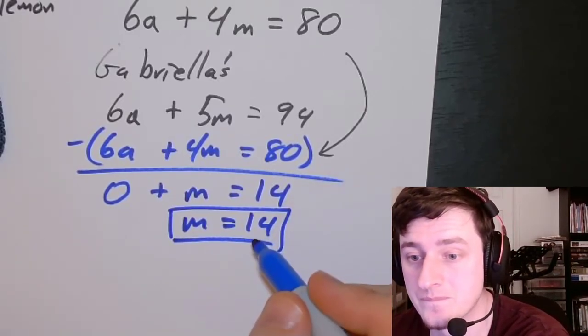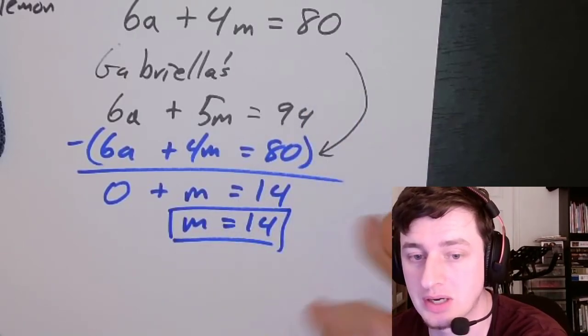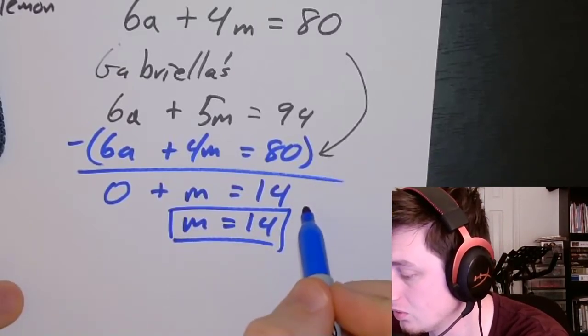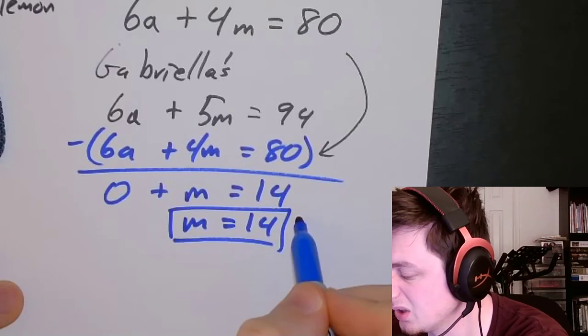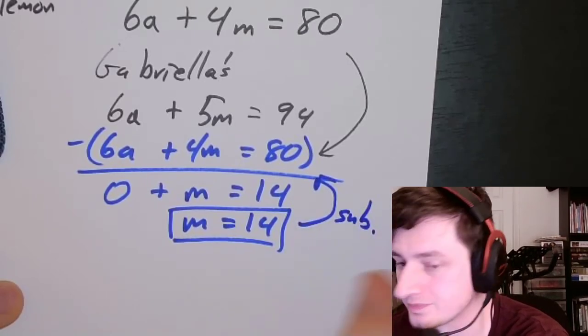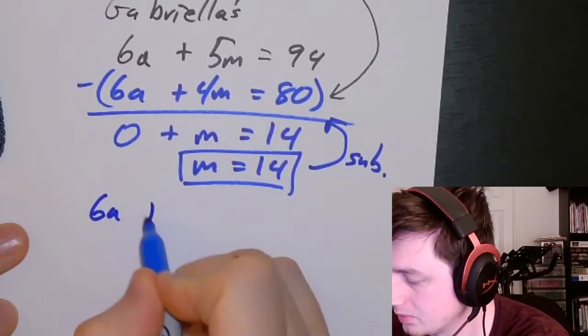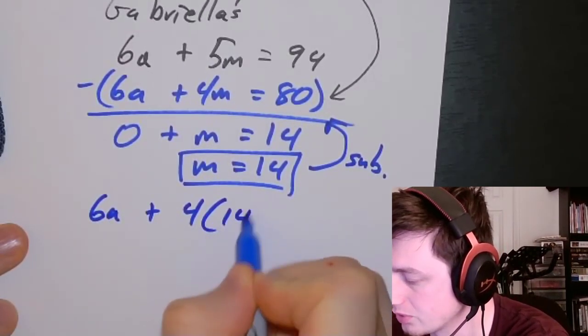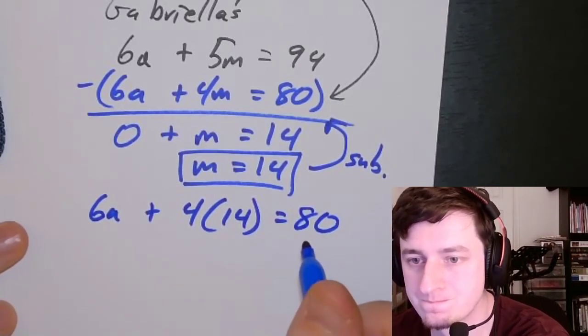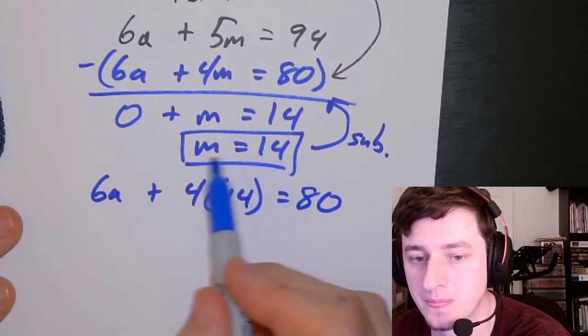We can take that and substitute it back into either of the equations to figure out what the cost of the apple pies are. Since it doesn't really matter, I'm just going to pick this equation. So 6A plus 4 times 14 equals 80. Replace the M with the value that we found.